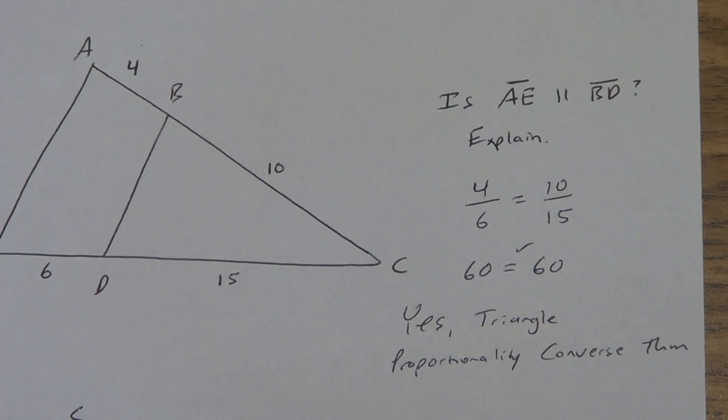So, what's the right answer? Is AE parallel to BD? Yes. Explain. Well, all we did was use the triangle proportionality converse theorem. Remember, original says I know it's parallel, let me set up the proportion and solve for the missing piece. The converse says I don't have any missing pieces. Let me see if the proportion actually works and then I can say they're parallel.